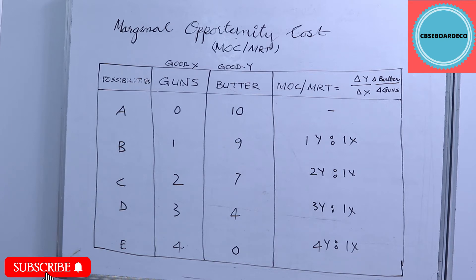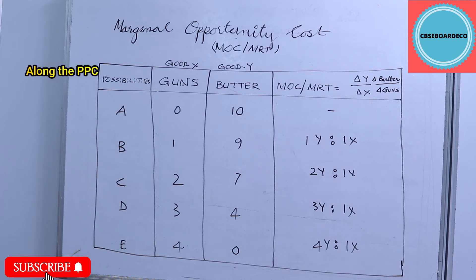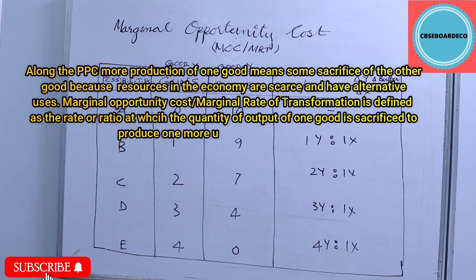So what is happening? The MOC — the rate of sacrifice — is increasing: one, two, three, four. Marginal Opportunity Cost clearly shows the rate of sacrifice of one commodity in order to produce one more unit of the other. Why is MOC increasing? It is increasing because all resources are not equally efficient to produce all commodities.